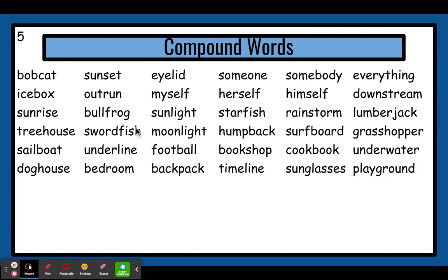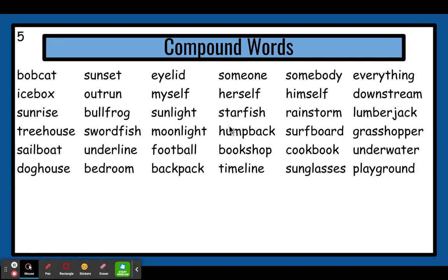Next we have moon and light. Moonlight. You know what the moon is, and you know what light is. Put them together, you have moonlight — light that comes from the moon, just like sunlight is the light that comes from the sun. Next word: first part is hump, second part is back. This is a type of whale called a humpback whale. Its back has a bump on it, so that's why they call it a humpback. A hump is another word for like a bump on its back.